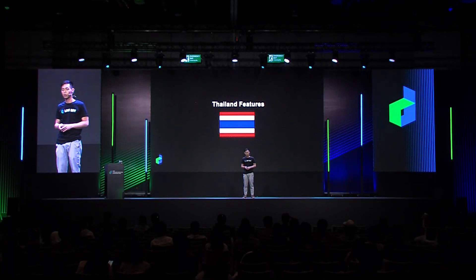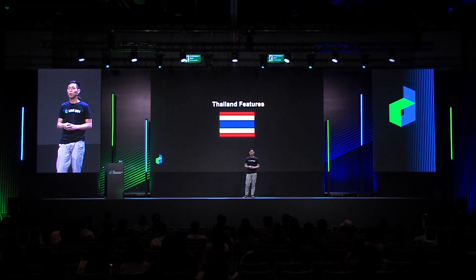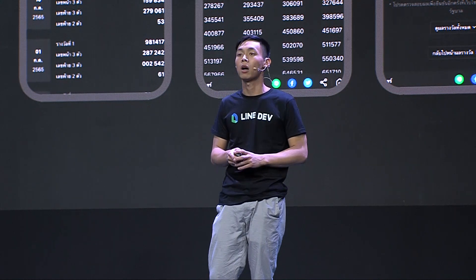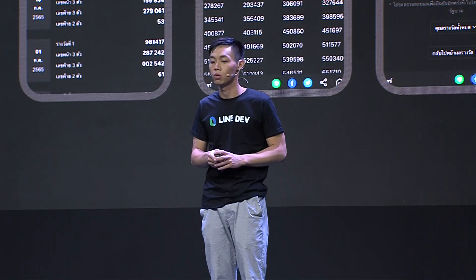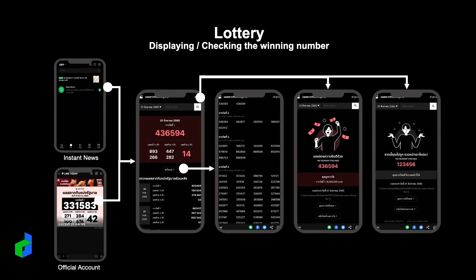In the second part, we introduce some features released from Thailand. Some features are customized for Thailand, and some are promoted to all other countries. Lottery service is a customized feature for Thailand — at around 5 p.m. on every lottery draw day, instant news above the chat room and push messages from the official account promote the lottery event to users. When the user clicks the event and enters the lottery end page, the winning numbers of the current draw as well as history draws are displayed. We also provide a feature to check whether your own number is winning. Users may see different pages depending on whether they win or lose. The server peak RPS is due to this checking result API, and the lottery number is cached so our server only needs to check the result without database access.